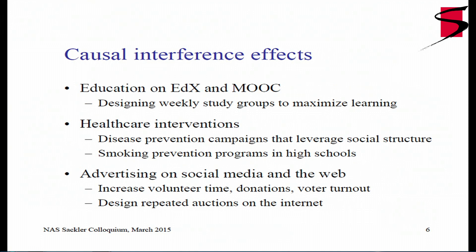Where do causal interference effects come up? One application is education on edX — massive open online courses. As a teacher, you have the opportunity to design collaborative assignments; you can decide who is going to work with whom on a given problem every week for 12 weeks or longer, and you can design study groups to maximize everyone's score. In healthcare interventions, there are disease prevention campaigns — think of Ebola or malaria. They leverage social structure: if the elder in the village has knowledge about how to prevent a disease, he might spread it around and people might listen.